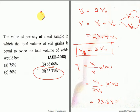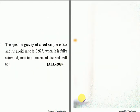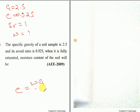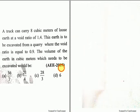The specific gravity of the soil sample is 2.5 and the void ratio is 0.925 when it is fully saturated. Since it is fully saturated, the degree of saturation is equal to 1. The moisture content of the soil — what is the moisture content? The formula is: E is equal to WG by SR. Please calculate the equation and comment the answer in the comment section. This question looks difficult but it is very simple.